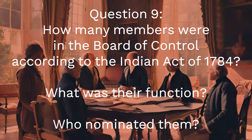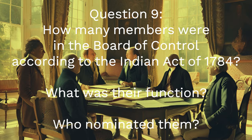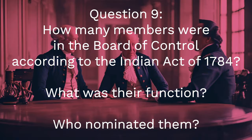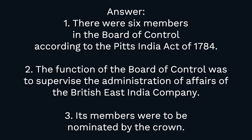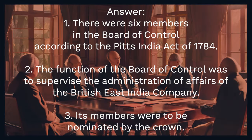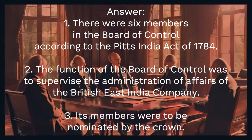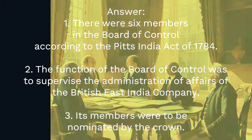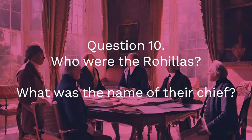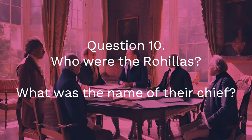Question 9: How many members were there in the Board of Control according to the Pitt's India Act of 1784? What was their function? Who nominated them? Answer: One, there were six members in the Board of Control according to the Pitt's India Act of 1784. Two, the function of the Board of Control was to supervise the administration of affairs of the British East India Company. Three, its members were to be nominated by the Crown.